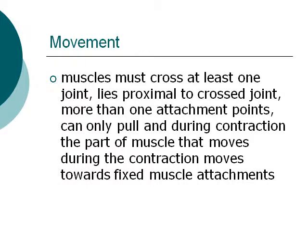Muscles have different criteria in terms of movement. Muscles must cross at least one joint, lie proximal to the crossed joint, and have more than one attachment point. Muscles can only pull, and during contraction, the part of the muscle that moves during contraction moves towards the fixed muscle attachment.